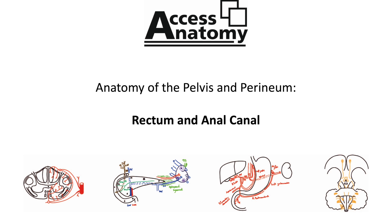The rectum extends inferiorly from the recto-sigmoid junction to pass through the pelvic floor. Once it has passed through the pelvic floor it becomes the anal canal. At the level of the pelvic floor, the rectum is pulled forward by the puborectalis muscle, and this demarcates the anorectal junction.